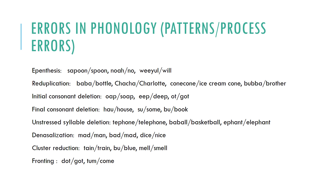Phonological error types include epenthesis — adding an additional sound, typically 'uh,' so 'spoon' becomes 'sapoon,' 'no' becomes 'Noah,' 'will' becomes 'wheel.' Reduplication is repeating one syllable: 'bottle' becomes 'baba,' 'Charlotte' becomes 'cha-cha.' Initial consonant deletion removes the first consonant: 'soap' becomes 'oop,' 'deep' becomes 'eep.' Final consonant deletion removes the end: 'house' becomes 'how,' 'book' becomes 'buh.' Unstressed syllable deletion occurs in the middle of words: 'telephone' becomes 'tephoon,' 'basketball' becomes 'babal,' 'elephant' becomes 'effunt.'